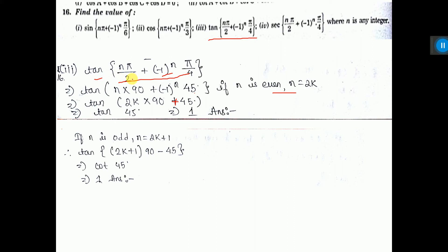Here n by 2 into 90. So n into 90, that is pi by 2, that is 90 degrees. And n equal to 2k into 90, here it will be plus 45 degrees, because n is even, so 2k into 90 plus 45 degrees.